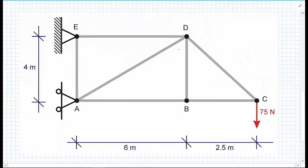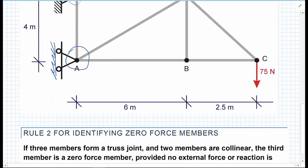Here at D, four members form a truss joint, no good. Two members at E, two members form a truss joint, no good. At A, three members form a joint, however we do have the reaction force in the X direction at A, so the rule doesn't apply.